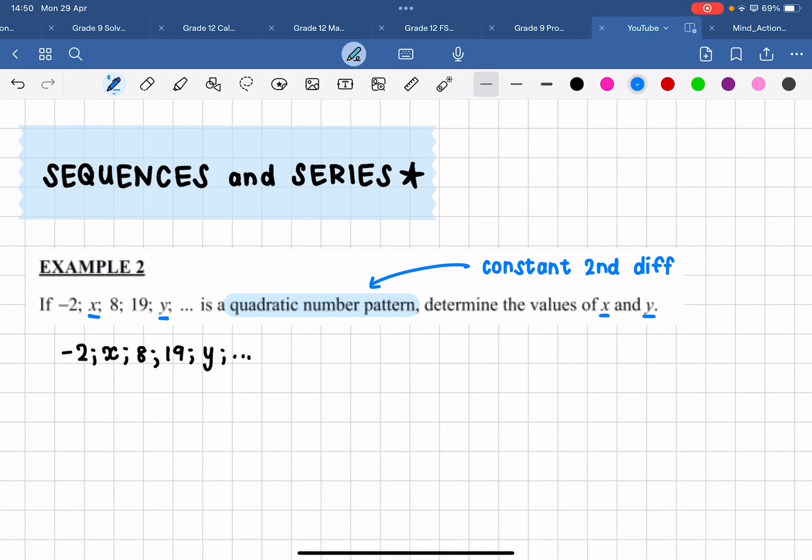Now sure, some of you might be able to do this by inspection, by just checking what must x and y be in order for there to be a constant second difference, but that is not always as easy as it seems. It's better to have a method that will always work.